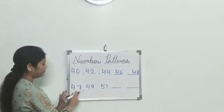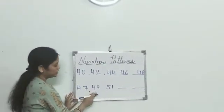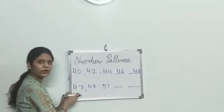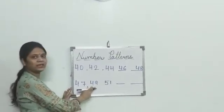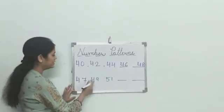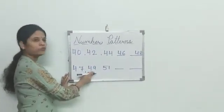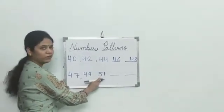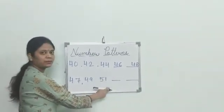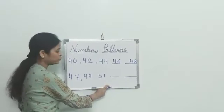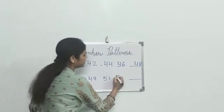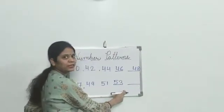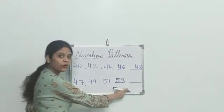Let's take one more example: 47, 49, 51. We first wrote 47. After 47 it says 49 — so we skipped 48. Then we skipped 50 and wrote 51. Here you will skip 52 and write 53. And after 53, we will skip 54.